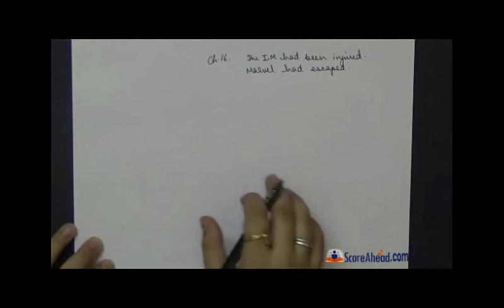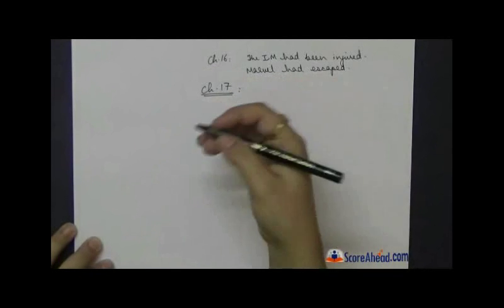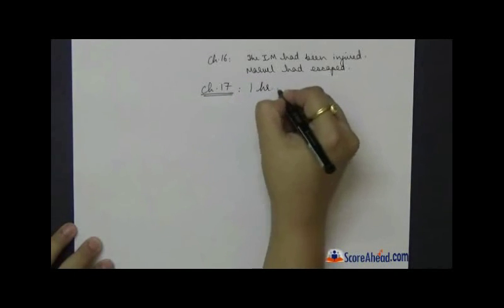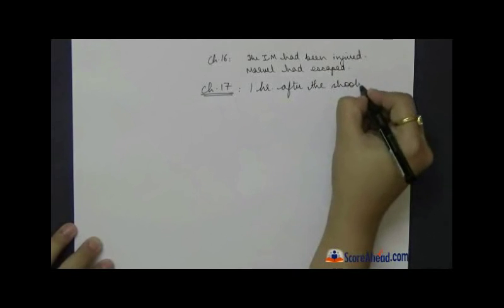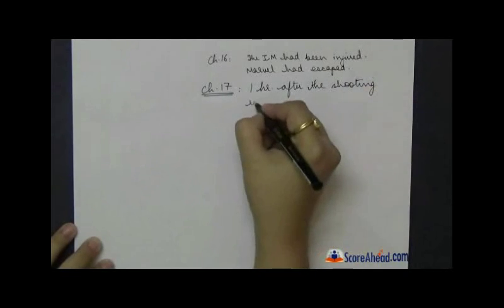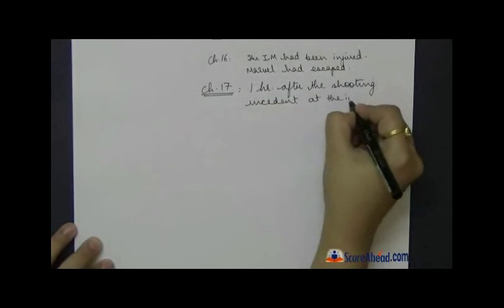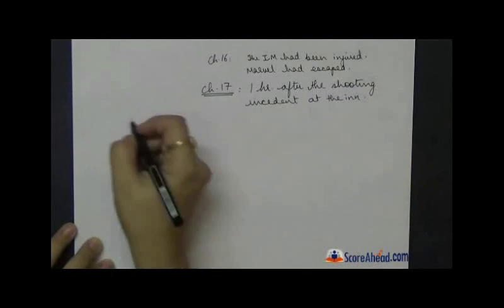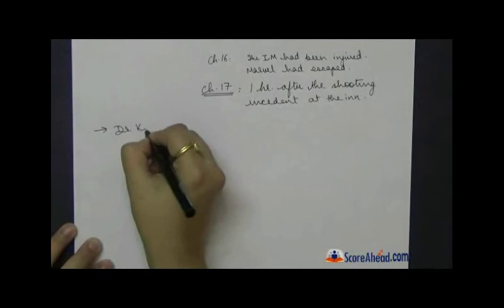So in this chapter, chapter number 17, the incident which takes place happens one hour after the shooting incident at the inn. So what happens one hour later? We are back to Dr. Kemp's house. We see Dr. Kemp...